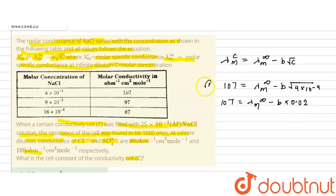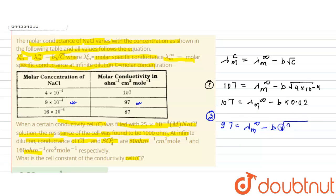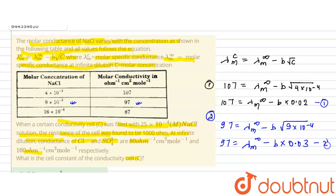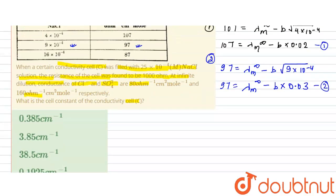For the second table value, molar conductivity is 97 at concentration 9×10⁻⁴. So: 97 = λ∞ − b × root(9×10⁻⁴). Since root(9×10⁻⁴) = 0.03, this gives equation 2: 97 = λ∞ − 0.03b. These are the two simultaneous equations to solve.